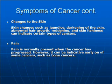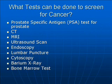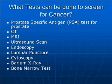What tests can be done to screen for cancer? Prostate specific antigen tests are used for prostate cancer. CT, MRI, ultrasound scan, endoscopy, lumbar puncture, cystoscopy, barium x-ray, and bone marrow tests can also be utilized.